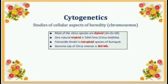Cytogenetics — studies of cellular aspects of heredity or chromosomes: Most citrus species are diploid, 2n = 2x = 18. One natural triploid is Tahiti lime, also known as Citrus latifolia. Fortunilla hindsii is a tetraploid species of kumquat. The genome size of Citrus sinensis is 360 MB.